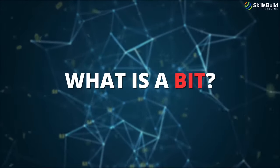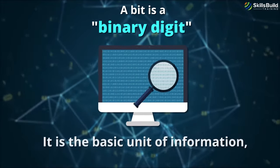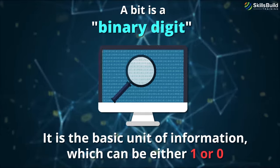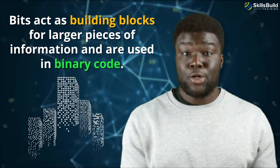As mentioned earlier, the Intel 4004 was a 4-bit processor. This doesn't mean that it was unable to process larger numbers, but rather that it could only work with 4 bits at a time. What is a bit, you might be asking? A bit is a binary digit. It is a basic unit of information which can either be 1 or 0. In the physical world, that means a bit can represent high voltage or low voltage. Bits act as building blocks for larger pieces of information and are used in binary code.